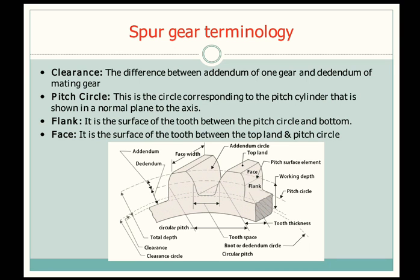Next is pitch circle. It is the circle corresponding to the pitch cylinder, shown in the normal plane to the axis. In the figure, the pitch circle is the imaginary circle which passes along the entire gear teeth, and when two gear teeth are meshing or contacting with each other, the pitch circles touch each other.